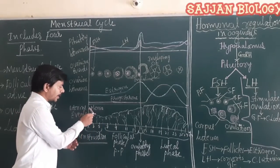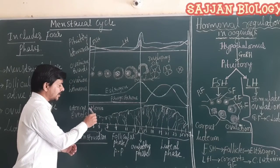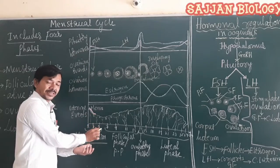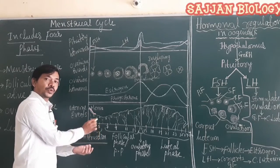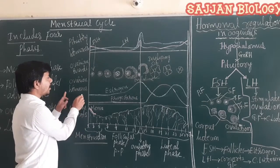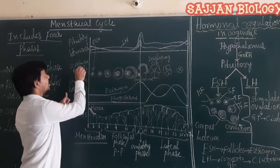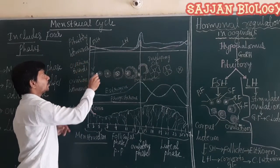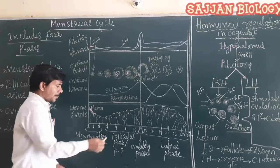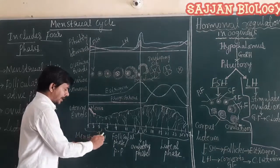The menstrual phase commonly lasts 3 to 5 days. During this phase, the endometrium wall degenerates, blood vessels and cells rupture, and blood is released through the vaginal orifice. During the menstrual phase, there are minimal changes in ovarian hormones, ovarian events, and pituitary hormones.